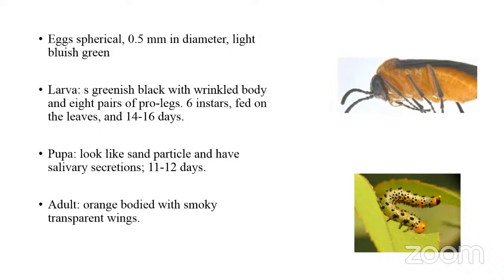The biology: eggs are spherical, about 0.5 mm in diameter, light bluish green in color. The larvae that hatch are greenish black with a wrinkled body. A peculiar character is that the larva has eight abdominal prolegs — this is frequently asked in competitive exams. There are six larval instars. Pupation takes place in the leaf itself, and the pupa looks like sand particles formed with salivary secretion. The pupal stage lasts about 11 to 12 days. The adult is orange-bodied with smoky transparent wings and is active during the seedling stage.